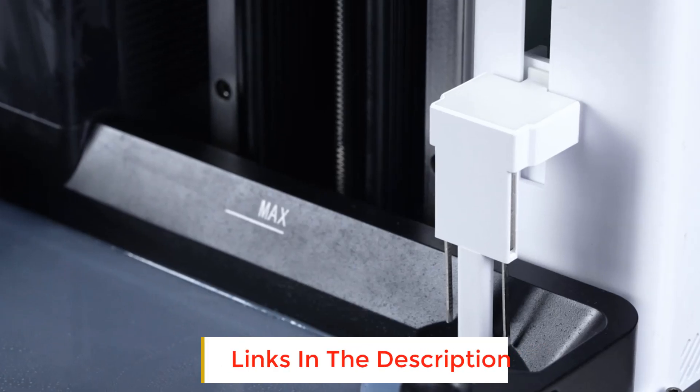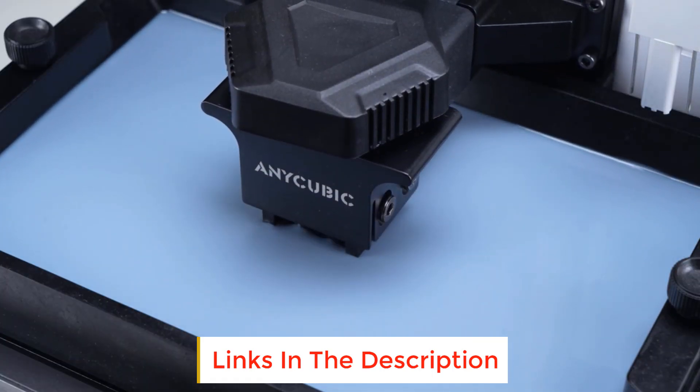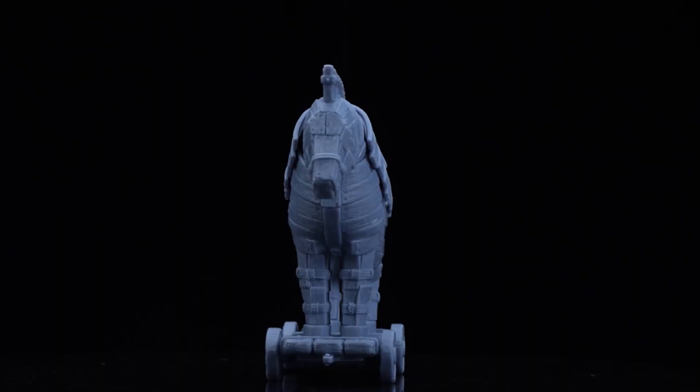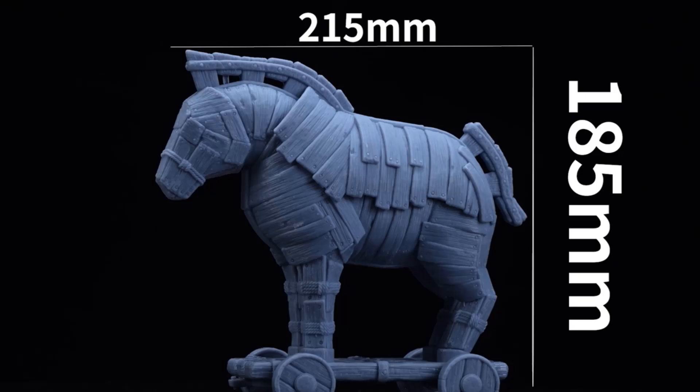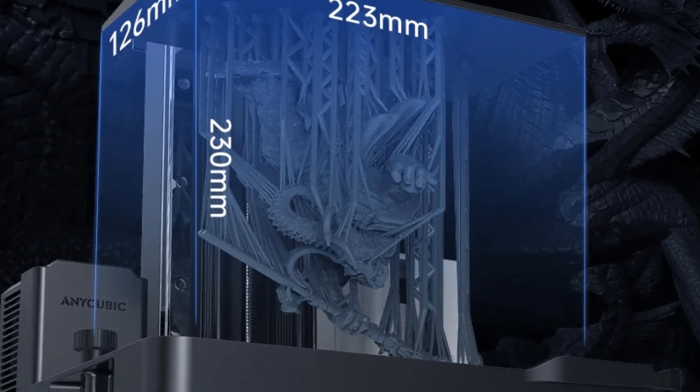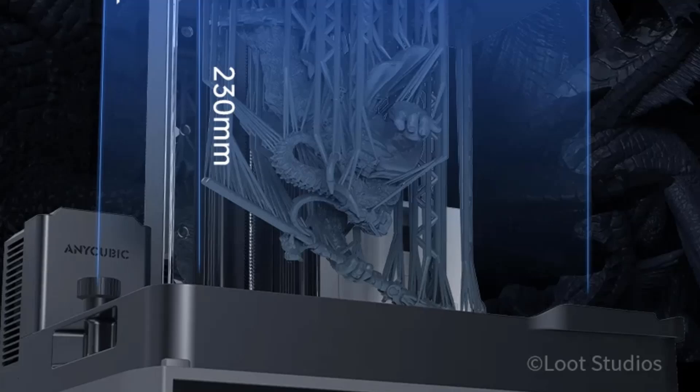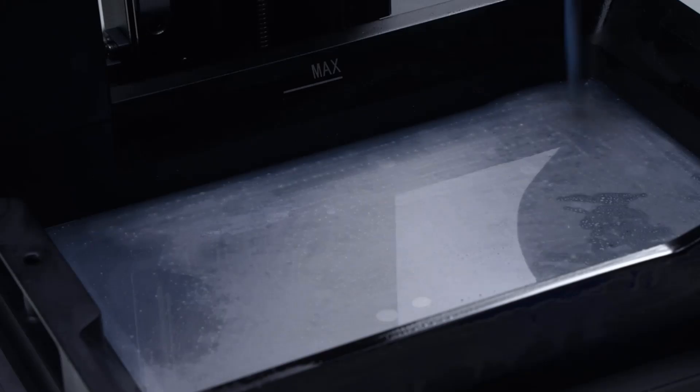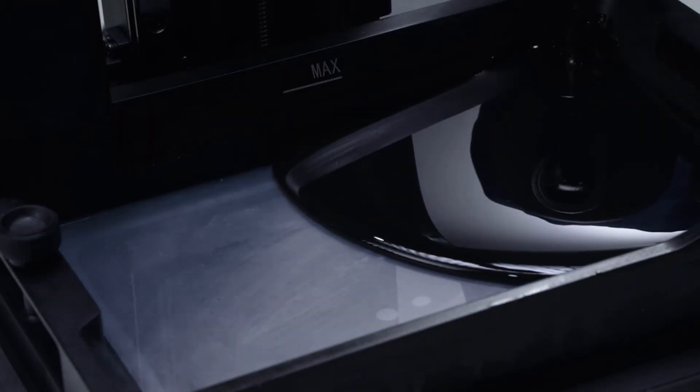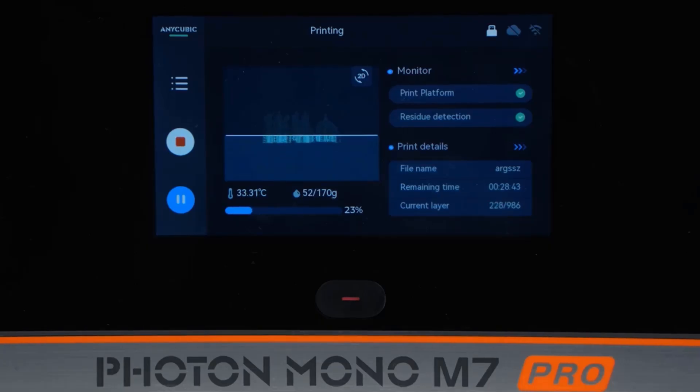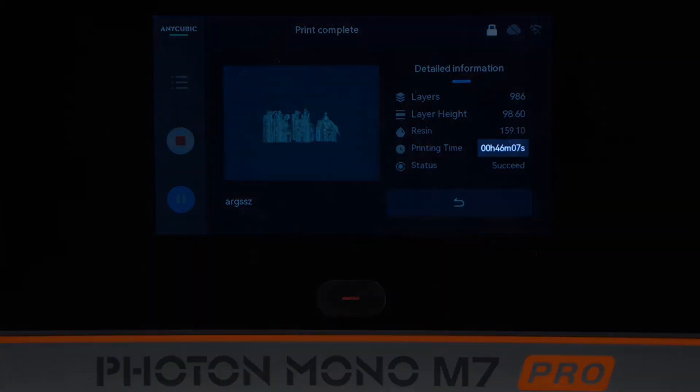Automatic precise leveling and zeroing of the device eliminates the need for manual leveling operations. During the printing process, if the model experiences issues such as layer fractures, bottom detachment, or detachment, printing automatically stops and a pop-up alert is issued, allowing users to adjust the printing task promptly, avoiding wasted resin and time. The system automatically monitors the number of times the release film is peeled off. Upon reaching 45,000 times, users are reminded to replace it promptly to avoid subsequent printing failures due to decreased release film performance.